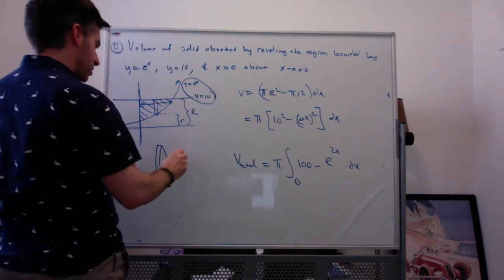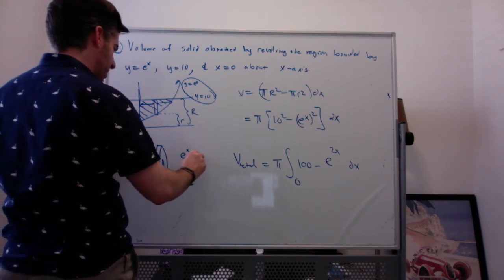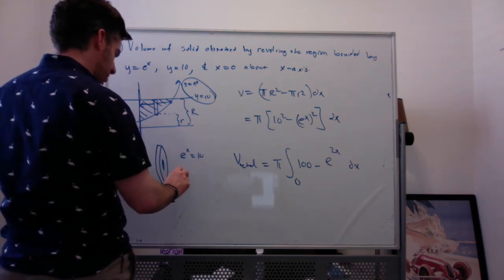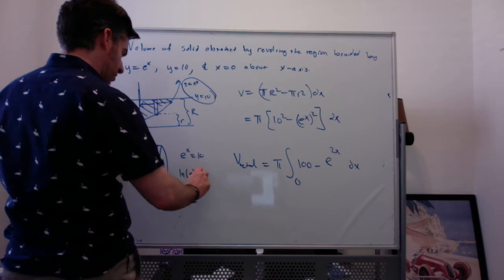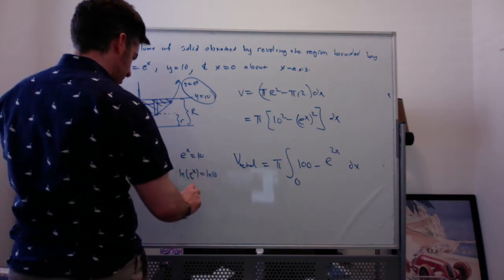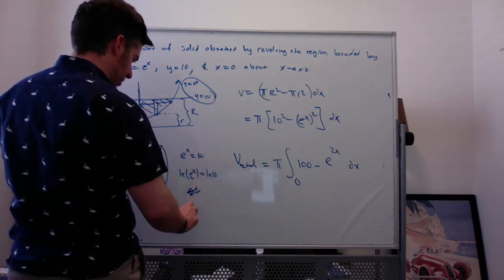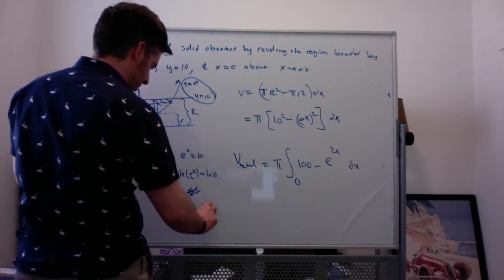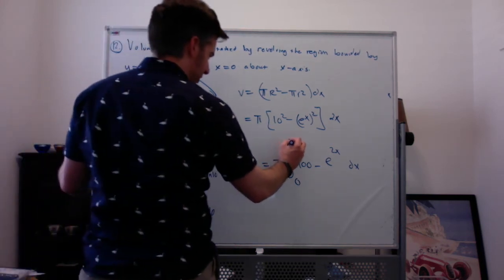So if you set these equal to each other, I set e to the x equal to 10, take the natural log of both sides. Natural log of e to the x equals natural log of 10. Natural log of e to the x is x equals natural log of 10. So that's my upper limit of integration, which is kind of funky.